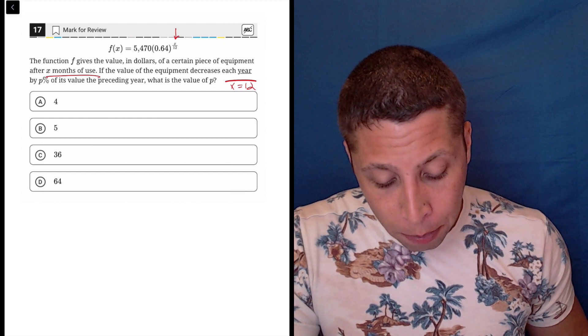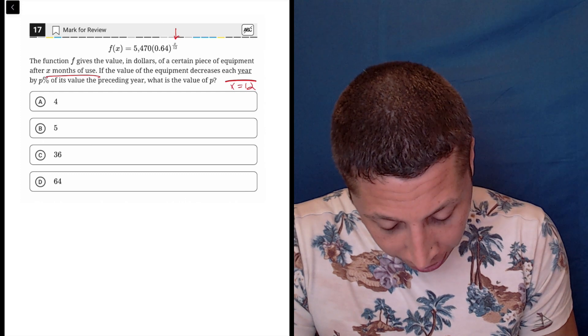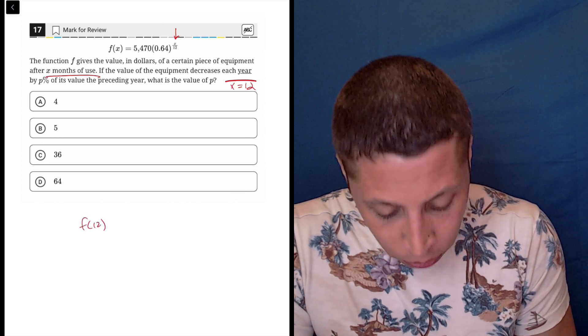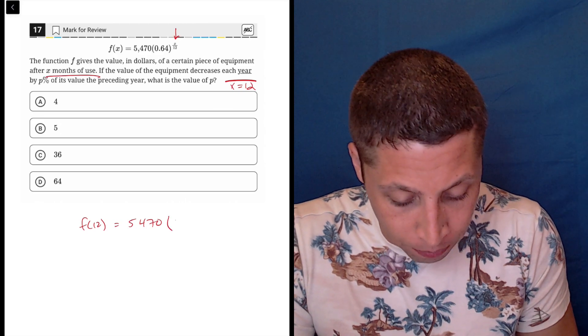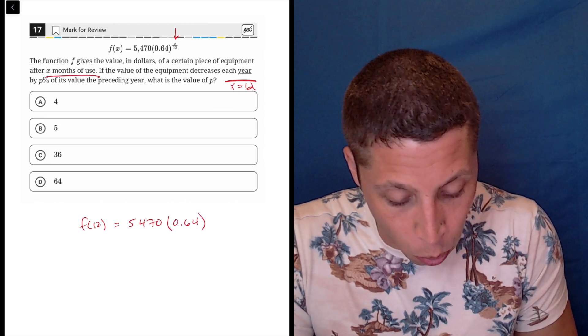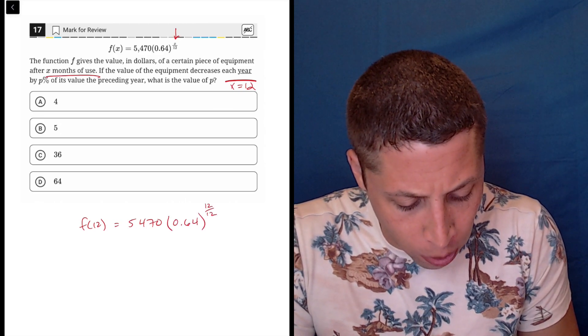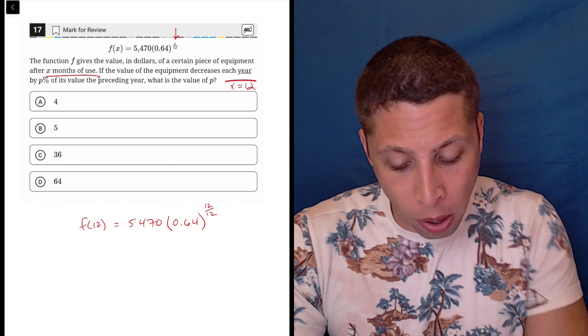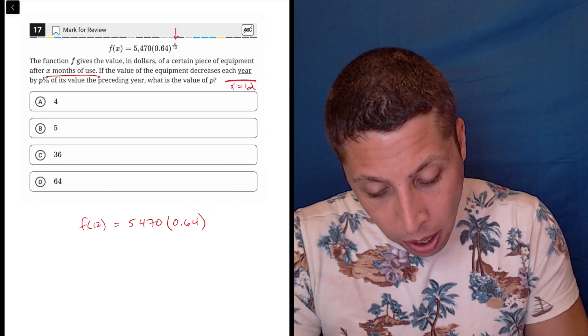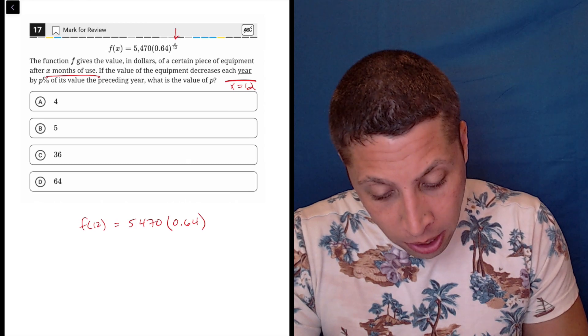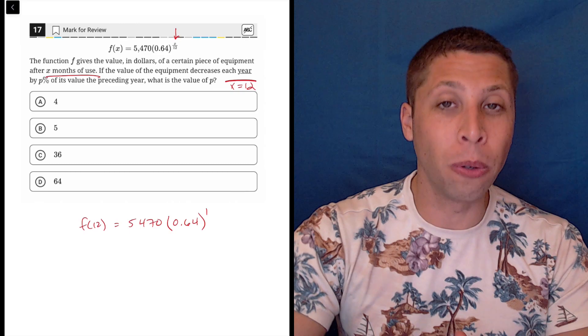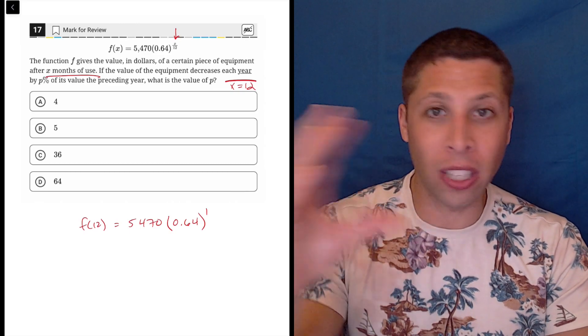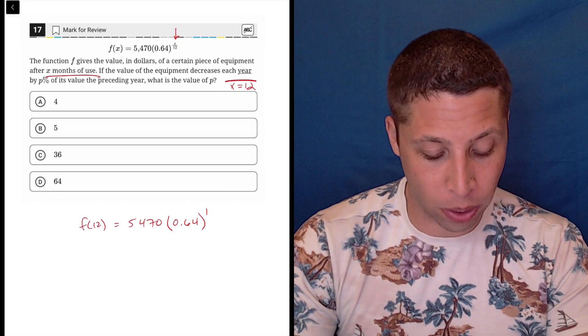Conveniently, if I plugged 12 in for x, what would happen? We'd have f(12), so that's one year, 5470 times 0.64, and then this is 12 over 12. But 12 over 12 is just 1. So a year is a nice, happy number here because it makes us return to the normal exponential, which doesn't have any fractions or weird things going on.